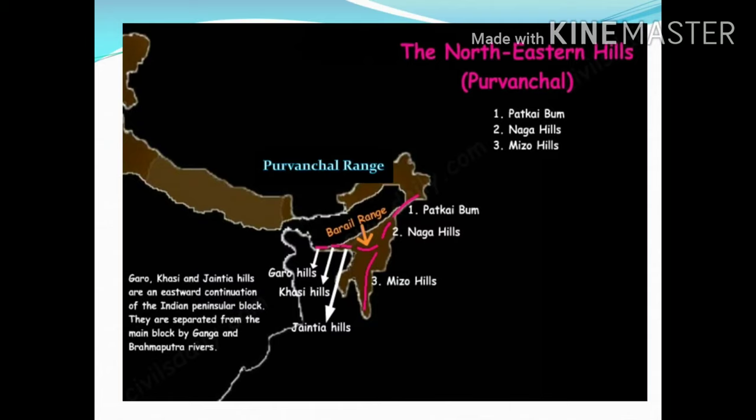In the given slide, you will see the northeastern hills, which are also known as the Purwanchal hills. These include Patkai Bam, Naga Hills, Mizo Hills, Garo Hills, Khasi Hills, Jayantia Hills and Barel Range, all part of the Purwanchal Range.